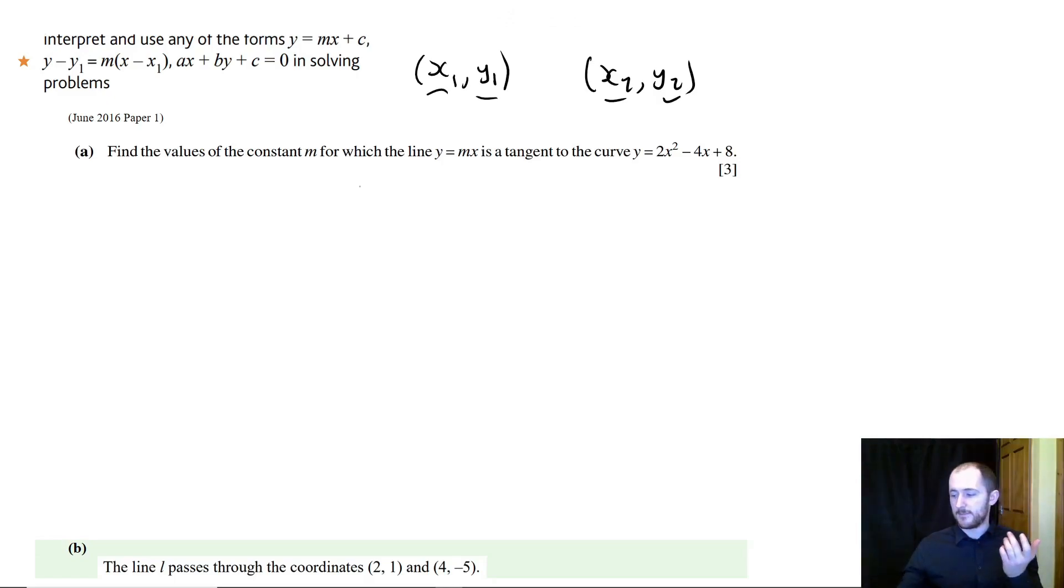However, I decided to pick a fairly tricky question yet again from the 2016 paper. What we have here is we need to find values of the constant m with the line y equals mx is a tangent to the curve. So just so you guys are aware, what a tangent is, is this curve here, so if I draw this out, is 2x squared. A tangent is going to touch the curve at one point.